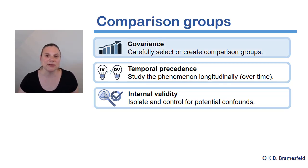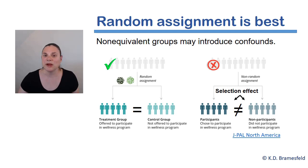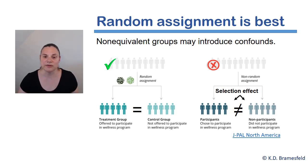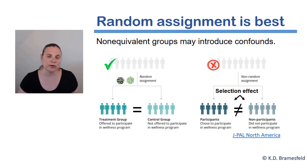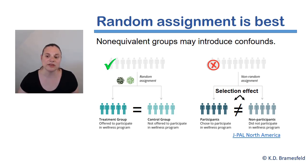We're going to start by talking about various comparison groups. You may recall that random assignment to conditions is the best way to create comparison groups, because any time that we use non-random assignment to conditions, or what we would call a non-equivalent group condition, this raises the possibility of introducing certain confounds, such as selection effects.